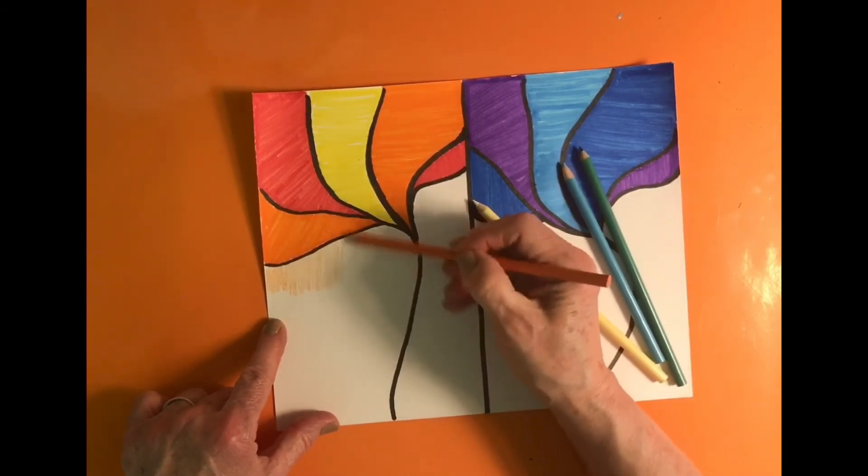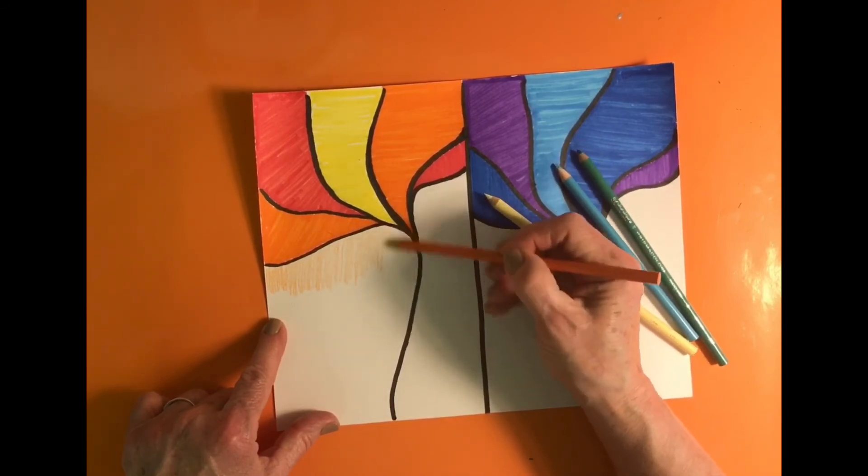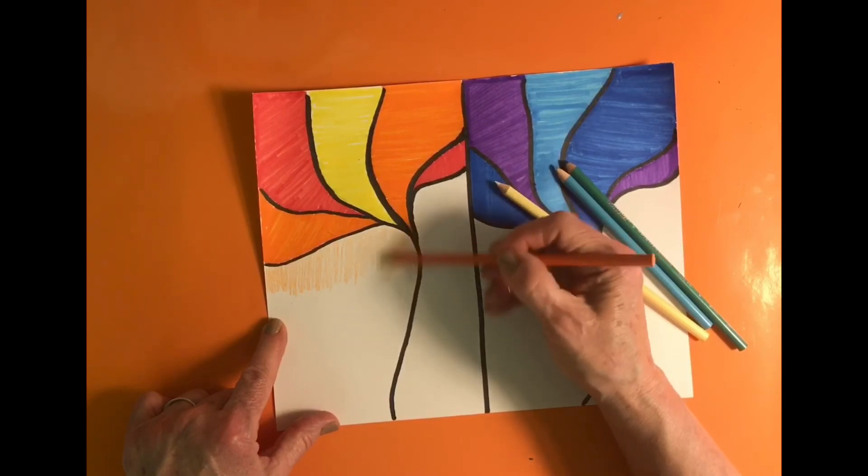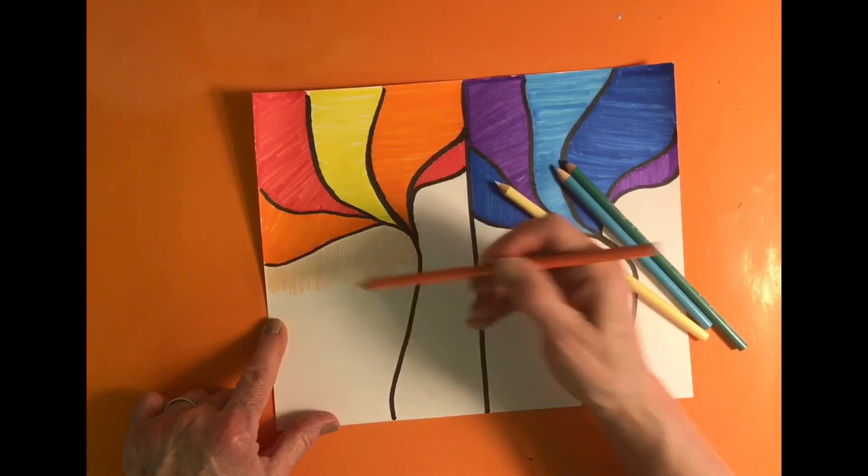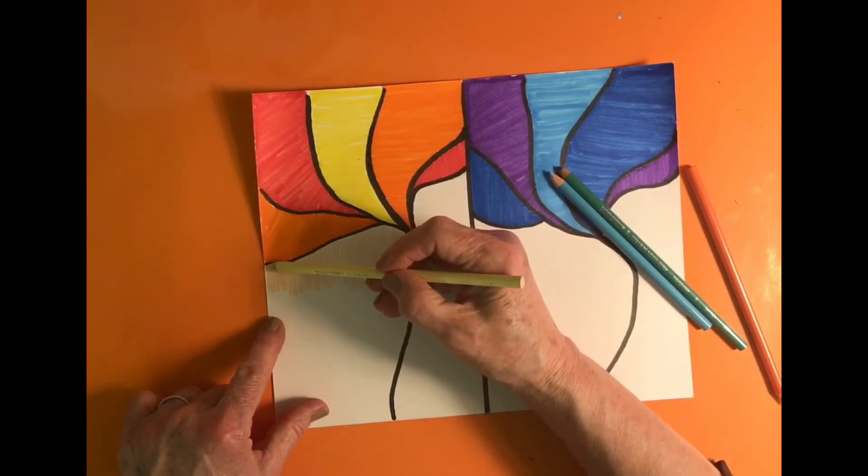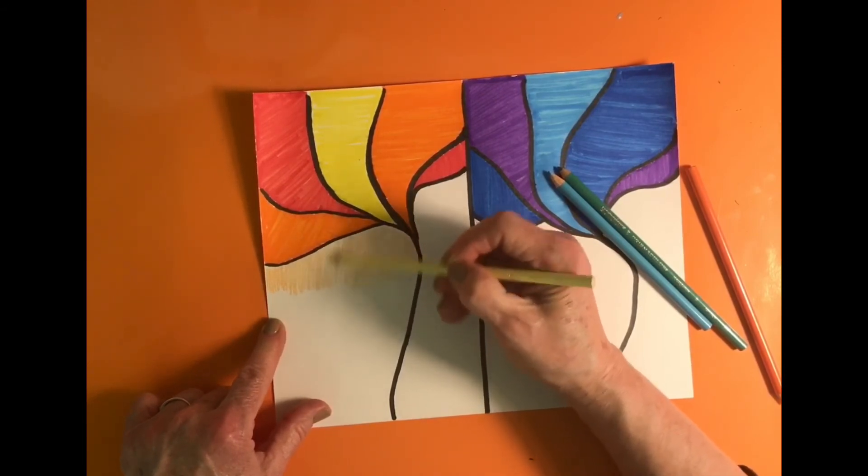First, I'm going to lay down the orange color. You notice I'm still coloring all in the same direction. And then I'm going to make my own color, which is a yellow-orange, so I'm going to be putting yellow on top of the orange.